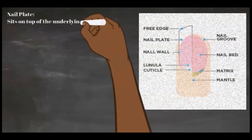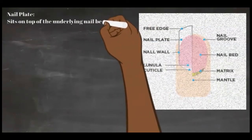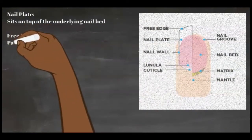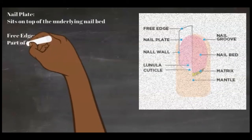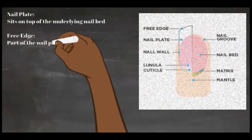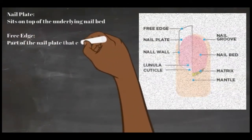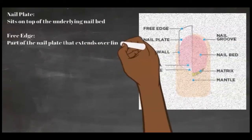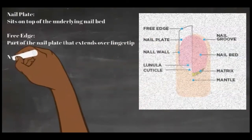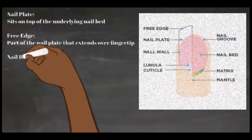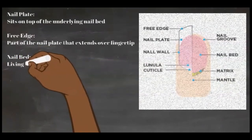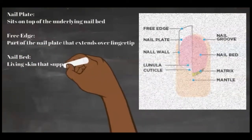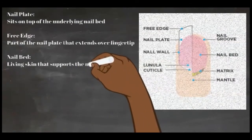The nail bed is a portion of living skin that supports the nail plate as it grows towards the free edge. The nail bed is supplied with many nerves and is attached to the nail plate by a thin layer of tissue called the bed epithelium. The bed epithelium helps guide the nail plate along the nail bed as it grows. Unfortunately, many nail technicians confuse the nail bed with the nail plate — as a professional, you should know the difference and use proper names for the parts of the nail unit.